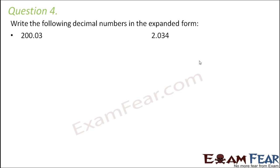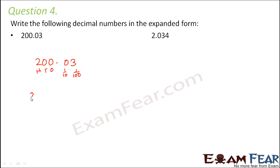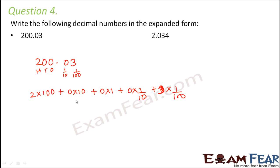Question number 4: write the following decimal numbers in expanded form. The first one is 200.03. We need to know the position of each digit: ones place, tens place, hundreds place, tenths place, and hundredths place. We write: 2 × 100 + 0 × 10 + 0 × 1 + 0 × (1/10) + 3 × (1/100). Anything multiplied by 0 equals 0, so we are left with 2 × 100 + 3 × (1/100).